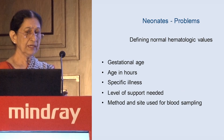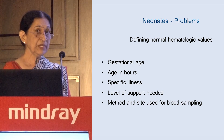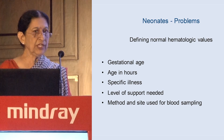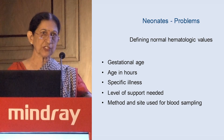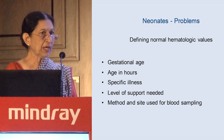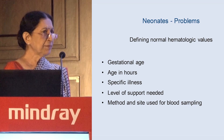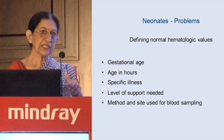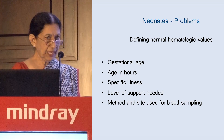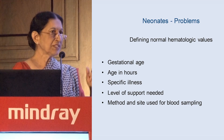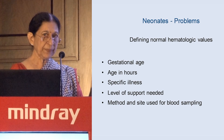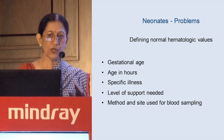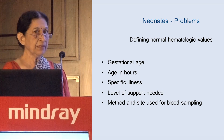The problems in neonates are to define normal hematologic values, which depend on the gestational age of the baby. Look at the variables in your neonates: age in hours — is the baby just born or six hours old? That makes all the difference to your normal values. Is the baby sick or a normal healthy neonate? What level of support does the baby need? And most importantly, where are you testing the blood from? Is it a venous sample or a finger prick or heel prick? It makes a lot of difference in interpretation.